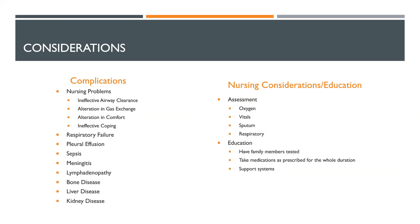Nursing problems commonly associated with TB include ineffective airway clearance, alteration in gas exchange, alteration in comfort, and ineffective coping. Medical complications include respiratory failure, pleural effusions, sepsis, meningitis, lymphadenopathy, bone disease, liver disease, and kidney disease.